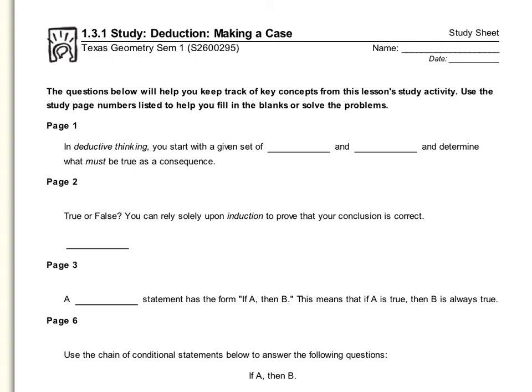Section 1.3 is about deduction. We just spent time talking about induction, and now we're talking about deduction. In deductive thinking, you start with a given set of rules and conditions and determine what must be true as a consequence, or as a result.